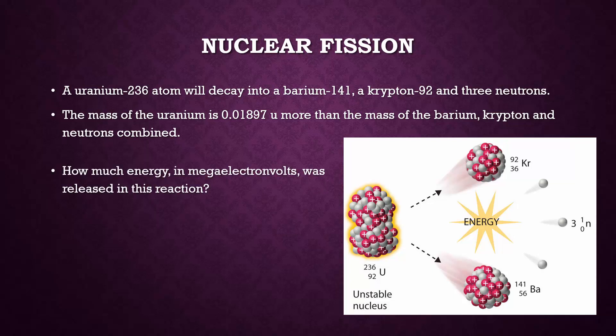I want to know how much energy in mega electron volts was released in this reaction. The first step is to set up a proportion. One universal mass unit over 931 mega electron volts equals 0.01897 universal mass units over X. If we cross-multiply and divide, we get an energy of 17.7 mega electron volts.